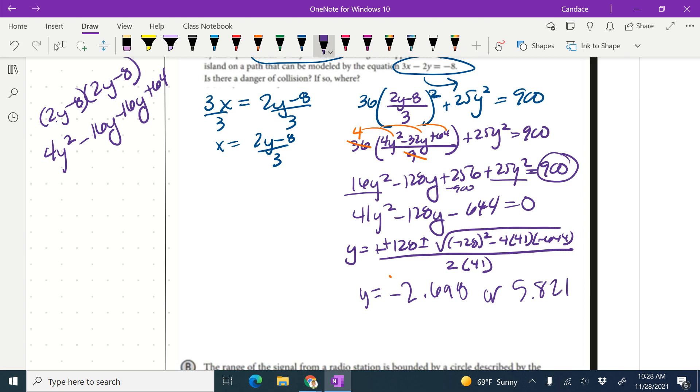So now I only have the y value. I have to get the x value. So I need to substitute back into this right here. So really what I am doing is I am doing x equals 2 times negative 2.698 minus 8 over 3, and then I'm doing another x that is 2 times 5.821 minus 8 over 3.